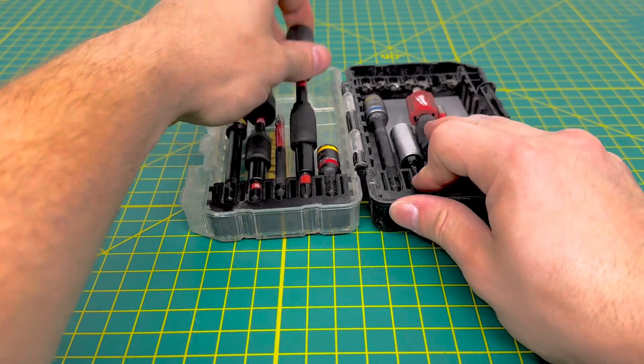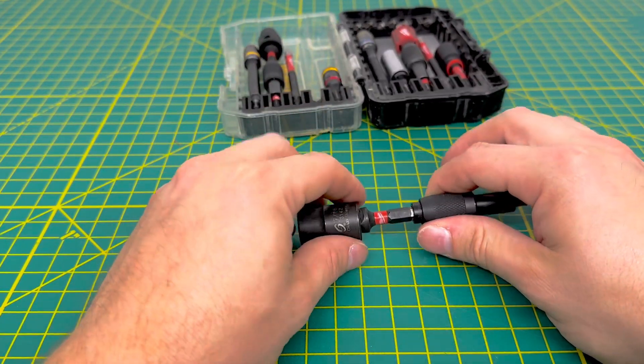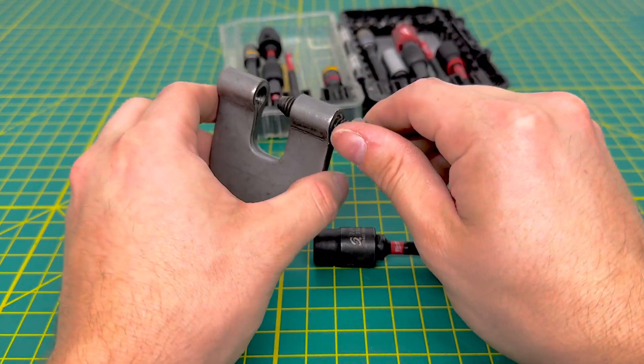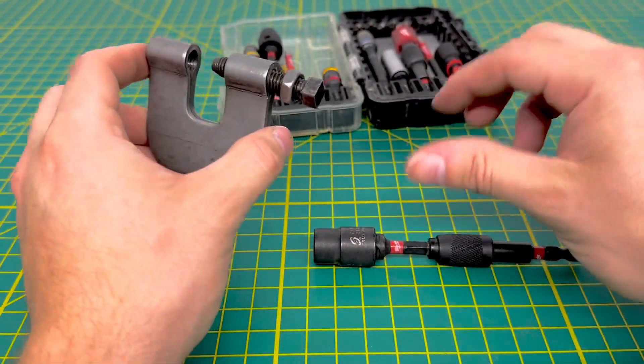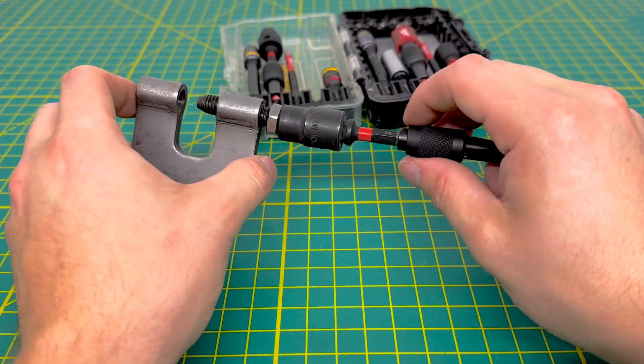And then we have another socket right here. Now this is a 7/16ths socket, which is very useful. We also use C-clamps, so again instead of using a 7/16ths wrench to tighten that down, you might as well get a socket to do that and tighten it down.